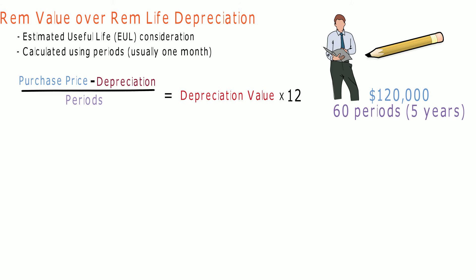We will use the remaining value over remaining life depreciation method to calculate how much the machine will depreciate each year. We will take the cost ($120,000) minus the depreciation (which for the first set of periods is $0) divided by the number of periods, or EUL (60). This gives us our monthly depreciation of $2,000. Multiplied by 12 gives us our yearly depreciation of $24,000.